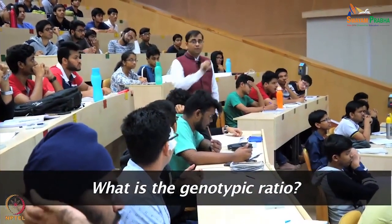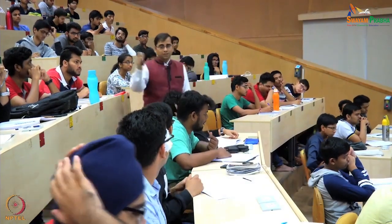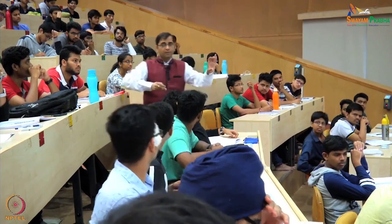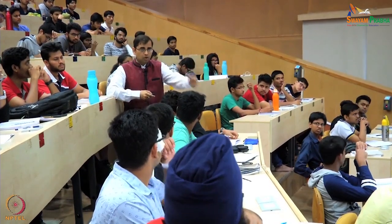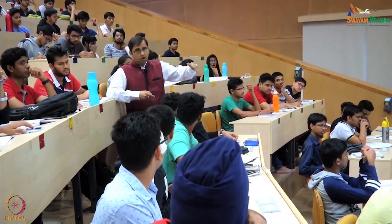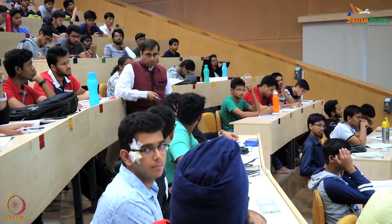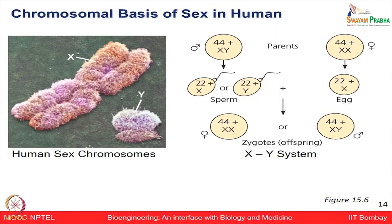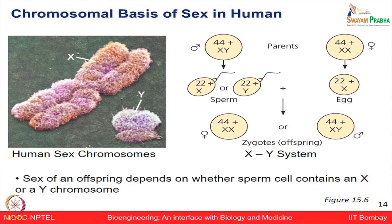You can determine the genotypic ratio among females, among males, and overall among all offspring. If you think about humans and the chromosomal basis of sex, we have 44 autosomes and XY chromosomes. The sperm carries either 22 plus X or 22 plus Y, and the egg always carries 22 plus X. This is the XY system, where X and Y chromosomes and the various genes linked to them are getting segregated.